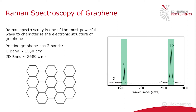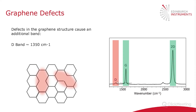So why is Raman so good at analyzing graphene? The key point is that the bands observed in the Raman spectrum, which correspond to the phonon modes, are directly related to the electronic structure of graphene. For a pristine monolayer of graphene — a hexagonal lattice of carbon atoms — it has two defining Raman bands: the G band at 1580 wavenumbers and the 2D band at 2680. However, creating perfect graphene is very difficult, and there will generally always be some amount of defects in the structure.